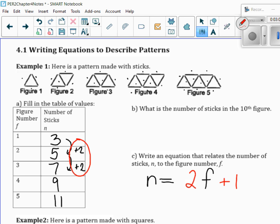So, if I multiply the second figure by 2, I get 4 and I add 1, I get 5. Hey, it works. If I multiply the next figure number by 2, I get 6 and I add 1, I get 7. It works every single time. So, if I want to find the number of sticks in the 10th figure, that would be 2 times the figure number, which is 10, plus 1 gives me 20 plus 1 gives me 21.